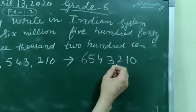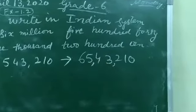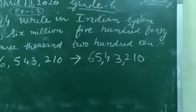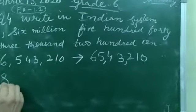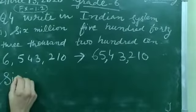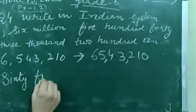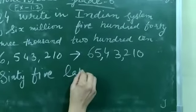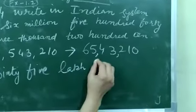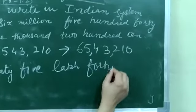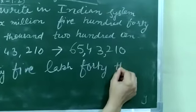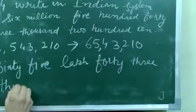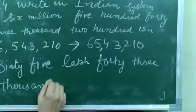Then I will put commas according to the Indian system. This becomes the Indian system. Now we will write it in words. 65,43,210.